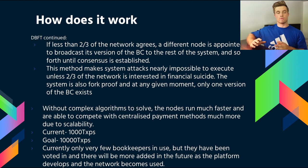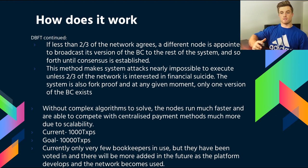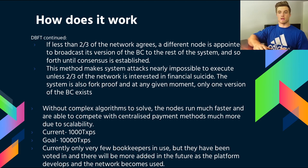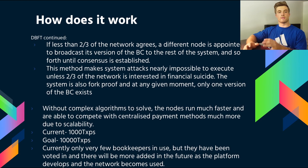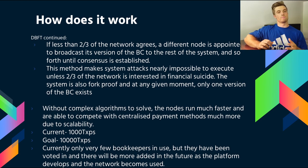If less than two-thirds of the network agrees, a different node will be appointed to broadcast its version, and this will continue until consensus is reached. This method makes attacks nearly impossible to execute unless two-thirds of the system want to execute financial suicide. The system is also fork-proof because at any given moment you only have one version of the blockchain existing. Without complex algorithms to solve, the nodes run much faster than proof-of-work nodes, allowing NEO to compete with centralized payment methods like Visa and PayPal due to higher scalability. They have a current transaction rate of about 1,000 transactions per second with a goal of 10,000.